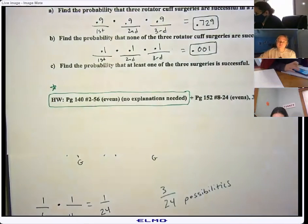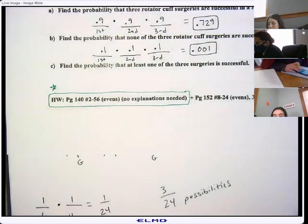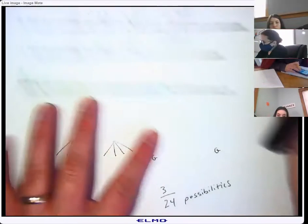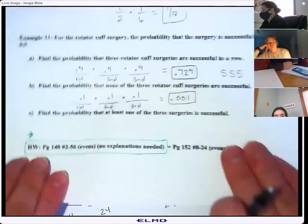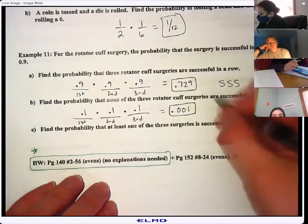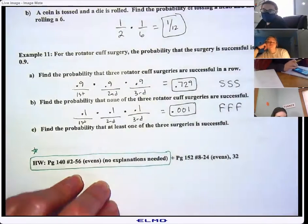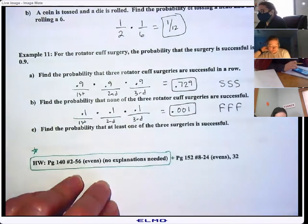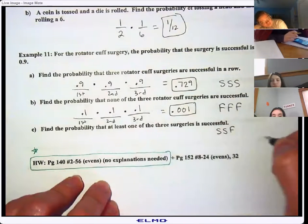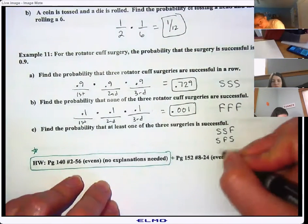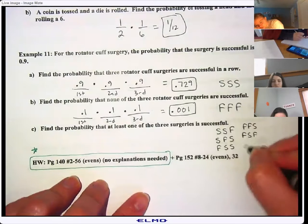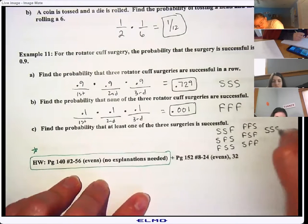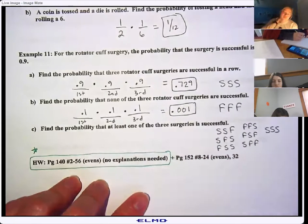Find the probability that at least one of the three surgeries is successful. Okay. So at least one of the three surgeries is successful would be, this is going to be hard because for A, we found out that we had three successes, right? Three successes in a row. And for B, it was three failures in a row. So we just did failure, failure, failure, or success, success, success. That makes sense? But the problem with this one is, everybody look up. You could have the first two being successful and then a failure, or you could have a success, a failure, a success, or you could have a failure and then two successes, or you could have two failures and one success, or you could have a failure, success, a failure, or you could have a success, failure, failure, or you could have all of them being successful and all of these would count. Do you see what I mean? What's the only thing that doesn't count? All fails.